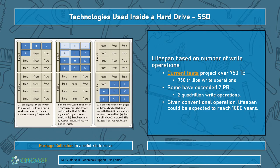Don't panic, because current tests project over 750 terabytes of information being writable. You can click the orange link in the lecture slides for a listing from techreport.com showing the SSD endurance experiment. 750 trillion write operations is what most will currently run at; some have exceeded 2 petabytes — a quadrillion write operations. A billion is a thousand million, a trillion is a thousand billion, and a quadrillion is a thousand trillion — a massive amount of potential operations. Given conventional use, a lifespan for a certain drive could be expected to reach a thousand years, though they can die a little early depending on usage.